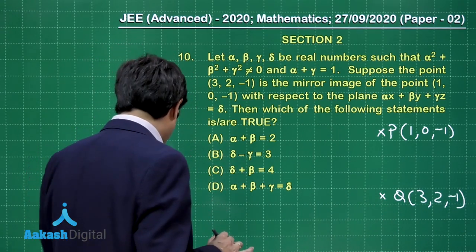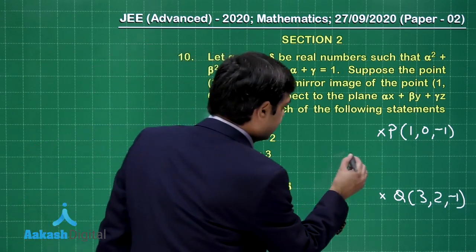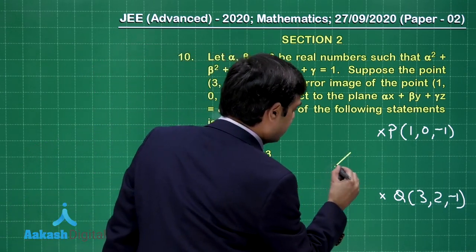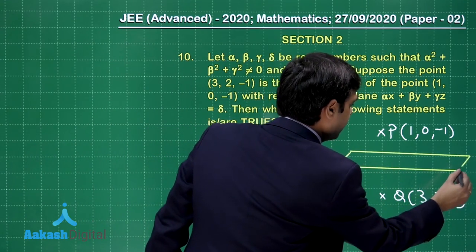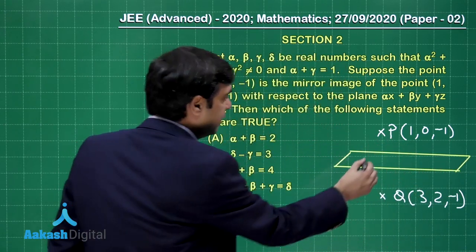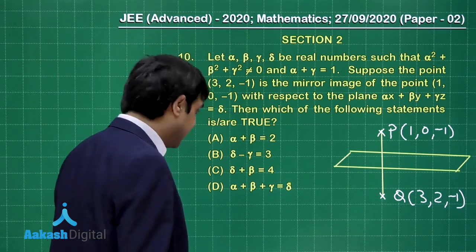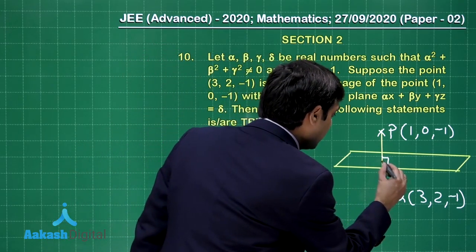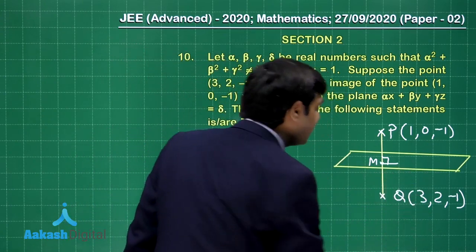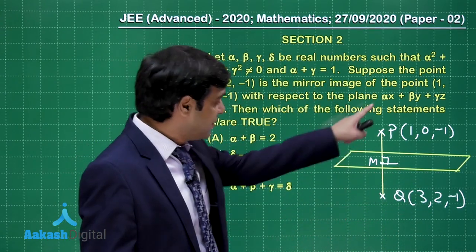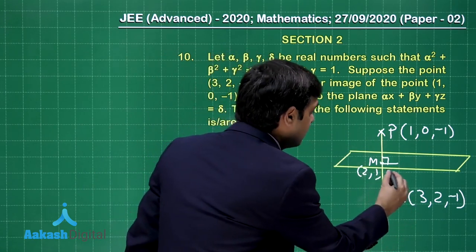Let us draw the plane. With respect to this plane, when we have the image, we can say PQ is the normal to the plane, and the midpoint M of PQ lies on this plane. The midpoint M is obtained as (2,1,-1).